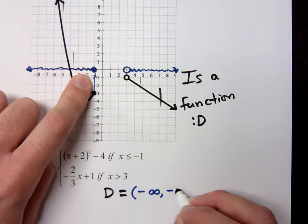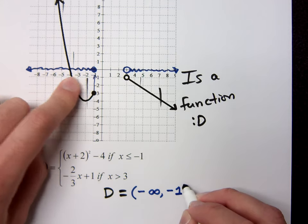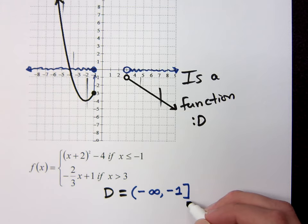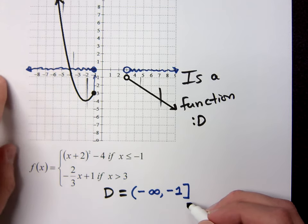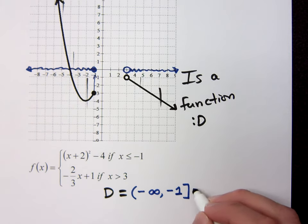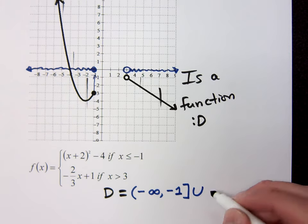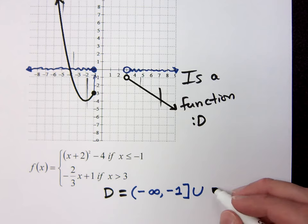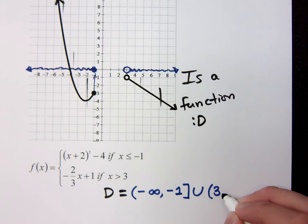I stop at negative 1, because I'm looking at the X values. I'm talking about the domain. You see, I'm going from negative infinity to negative 1. I pick back up where? U. I'm going to use parentheses, what? Not negative, the X value is 3, going to infinity.